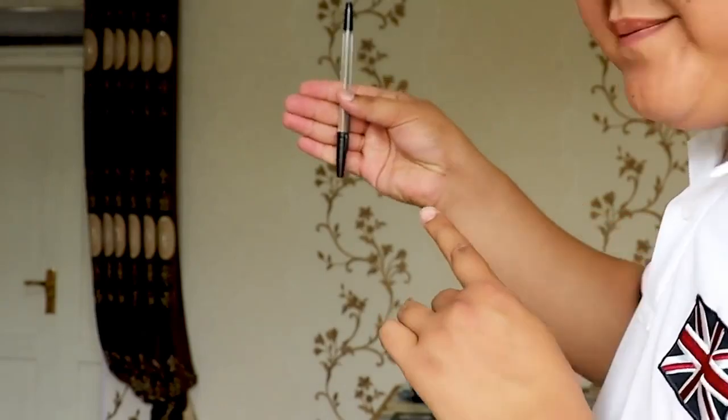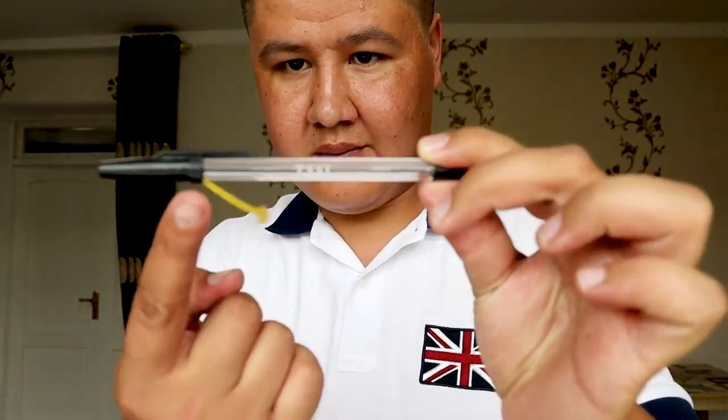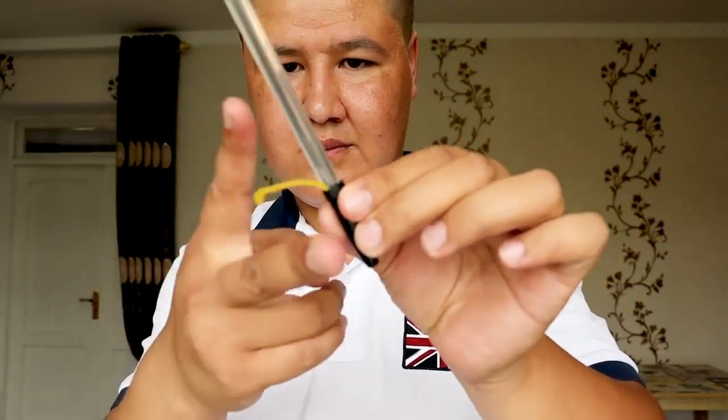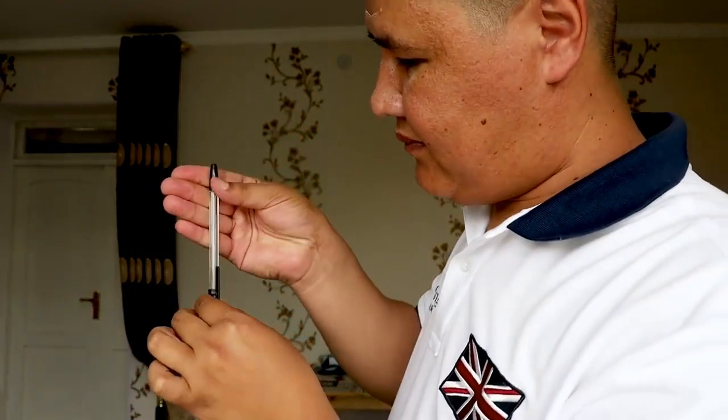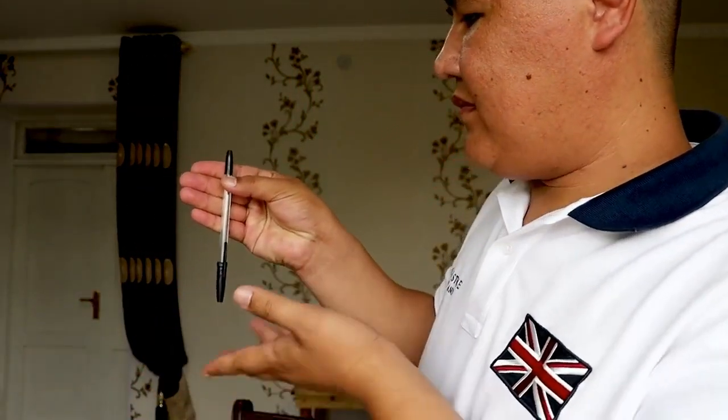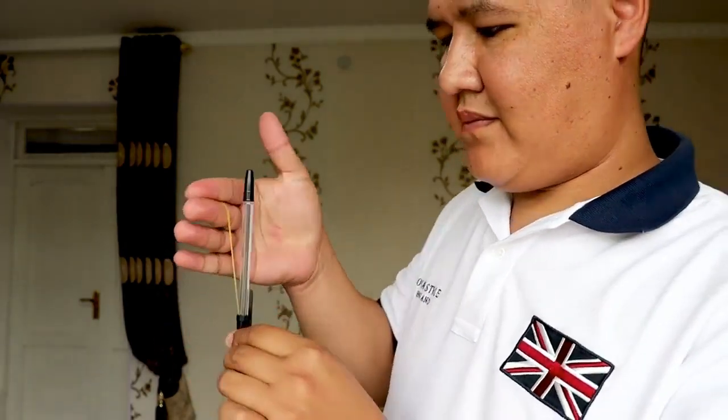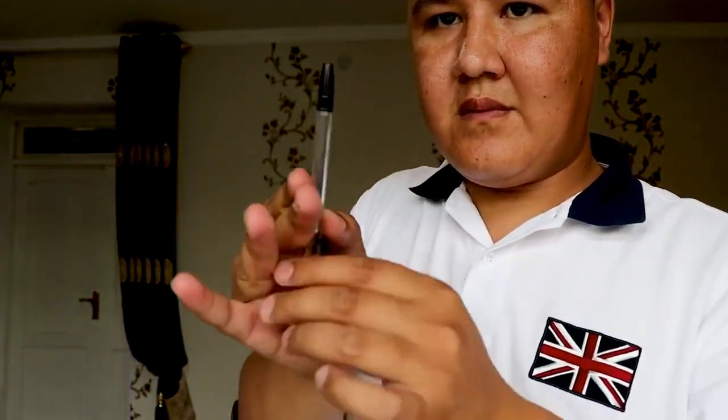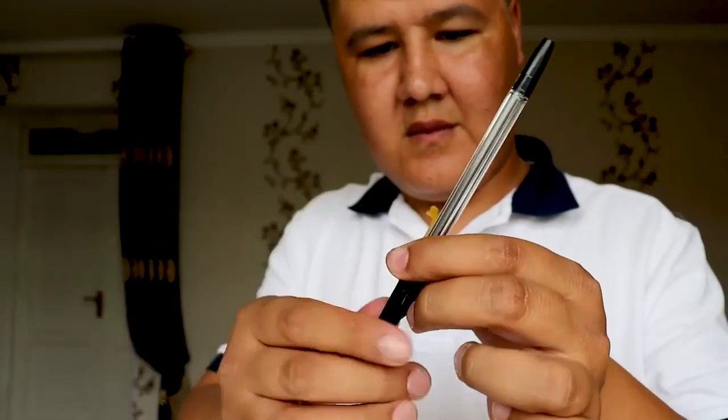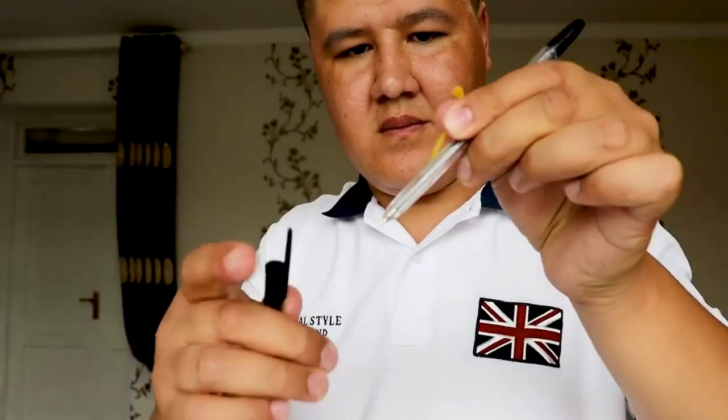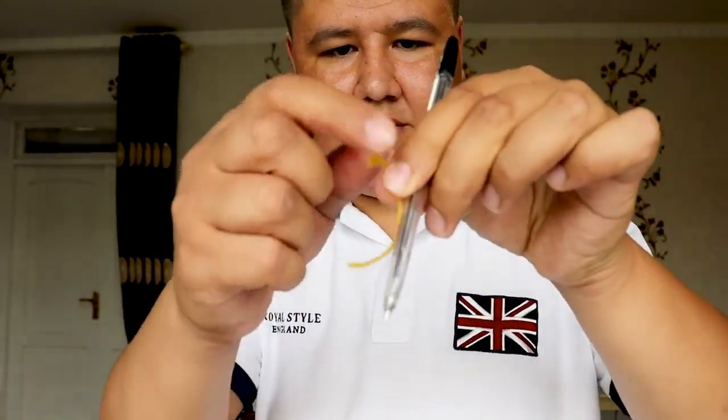The secret to this trick lies in the use of a small gimmick or device that is hidden from view. The device is typically a thin piece of wire or a small magnet that is attached to the pen. The magician will hold the pen in their hand, with the hidden device facing towards their palm. As the magician moves their hand upwards, the hidden device will create the illusion that the pen is rising up on its own. The movement is achieved by the magician subtly manipulating the position of their hand and fingers to create the illusion of the pen floating.